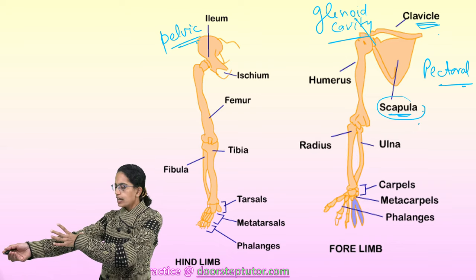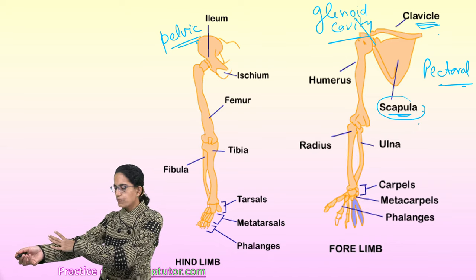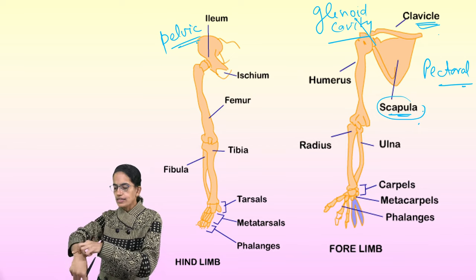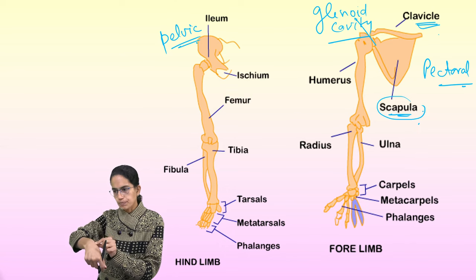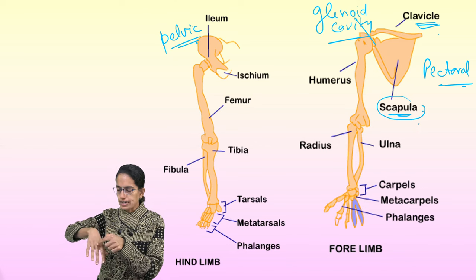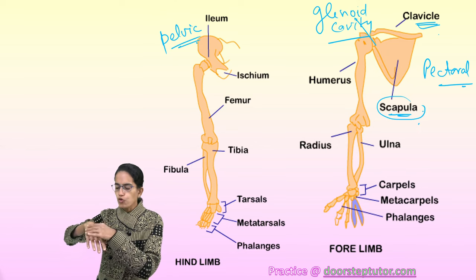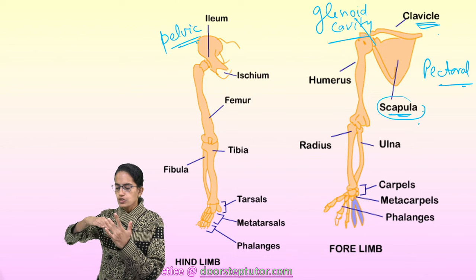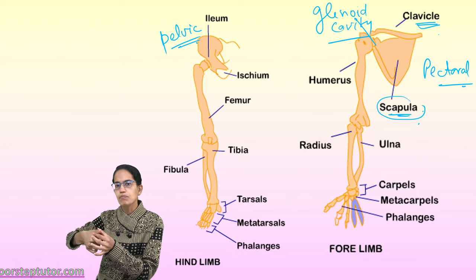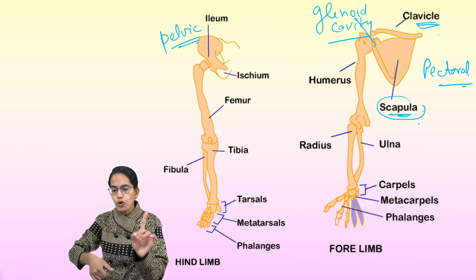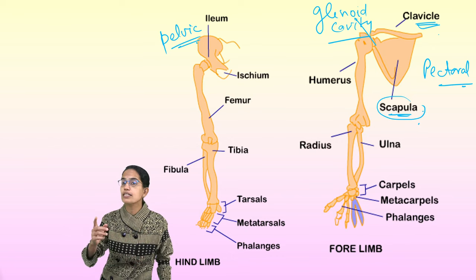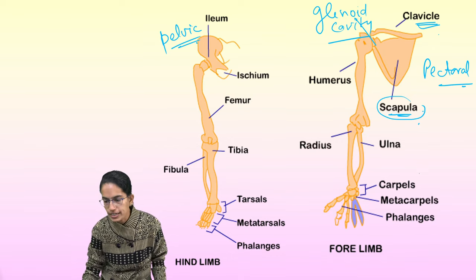The upper bone of the arm is known as the humerus. In the lower portion we have two bones: the radius and the ulna. The portion of the hand where carpals are present has eight carpals. From those eight carpals, five metacarpals originate. From those five metacarpals there are phalanges. In the hand they are called carpals and metacarpals; in the leg they are called tarsals and metatarsals.